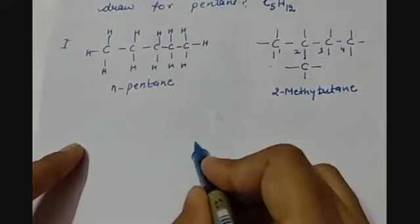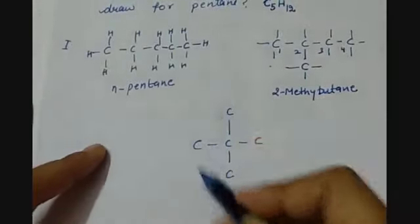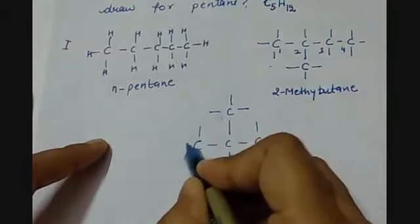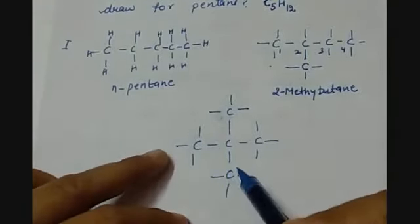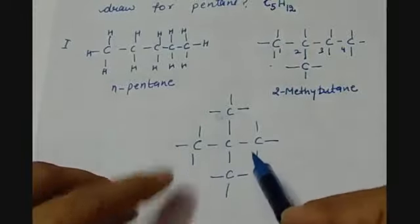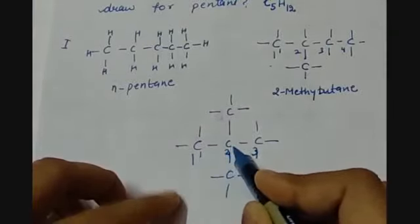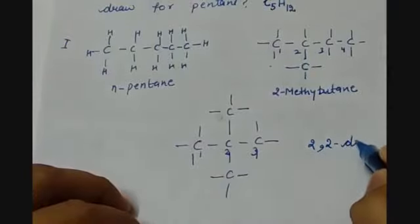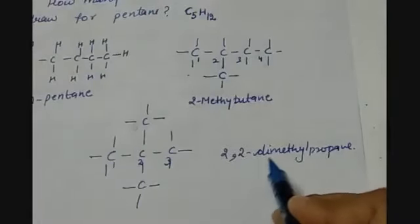We can also try with 3 carbon atoms in a straight chain where the second carbon has one methyl group on each side, giving total 5 carbon atoms with valencies completed by hydrogen — 12 hydrogens total. On the second carbon we have 2 methyl groups and the main chain is now propane, so the name is 2,2-dimethylpropane.